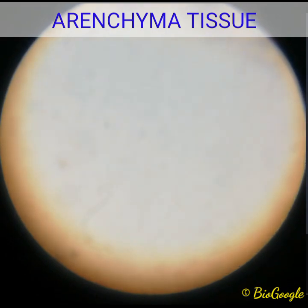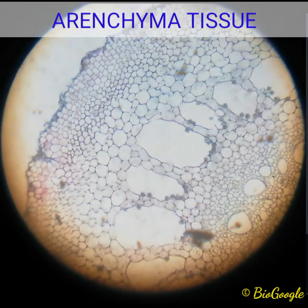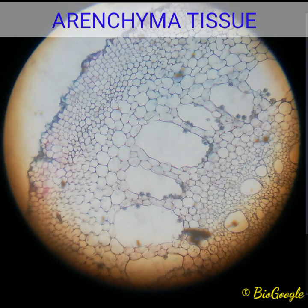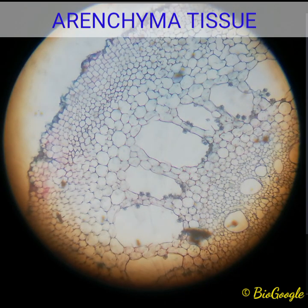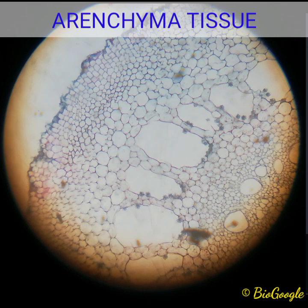Next is aerenchyma tissue, one of the parenchyma tissues that stores air spaces. Here you can clearly see the air gaps between the groups of cells. Aerenchyma is present in plants that grow in water — aquatic plants — especially those that require the property of buoyancy, meaning floating on the water surface. For example, the lotus plant whose leaves and flowers float on water, just because the plant has aerenchyma tissue in it.